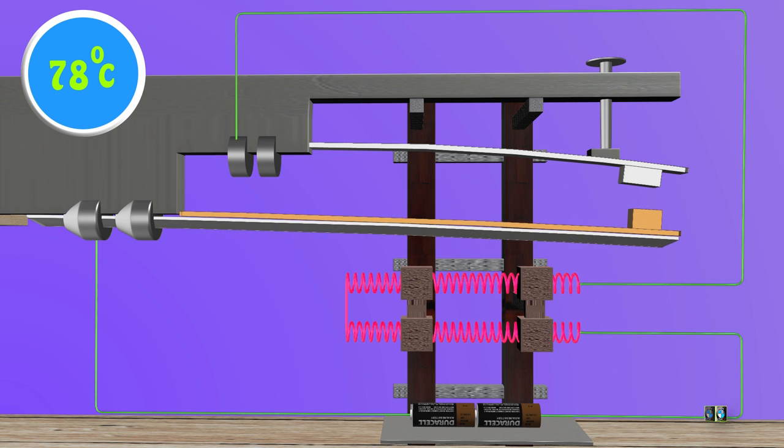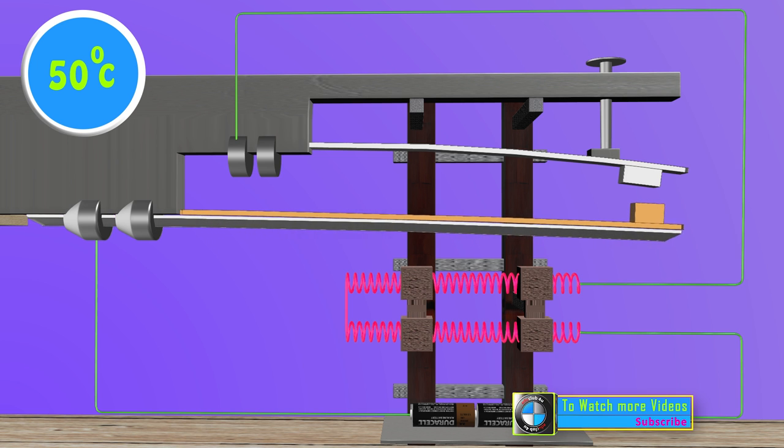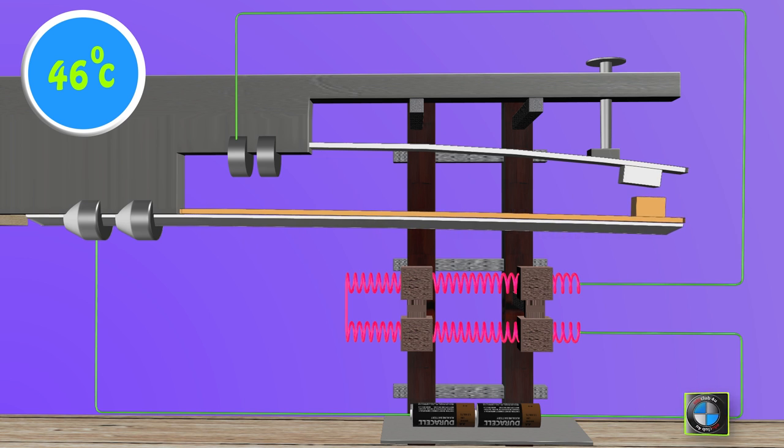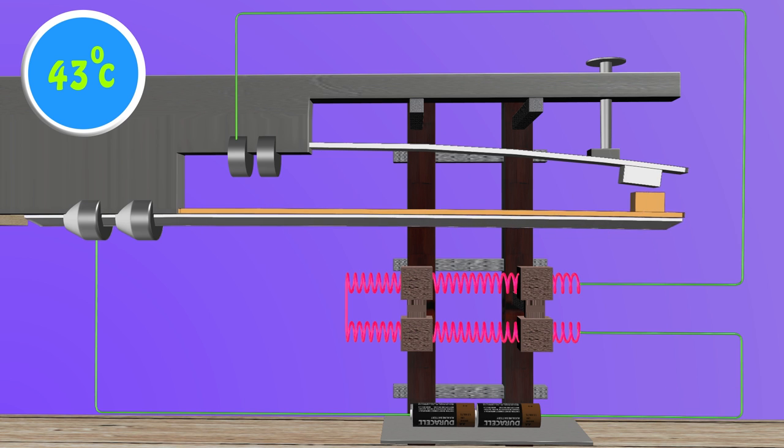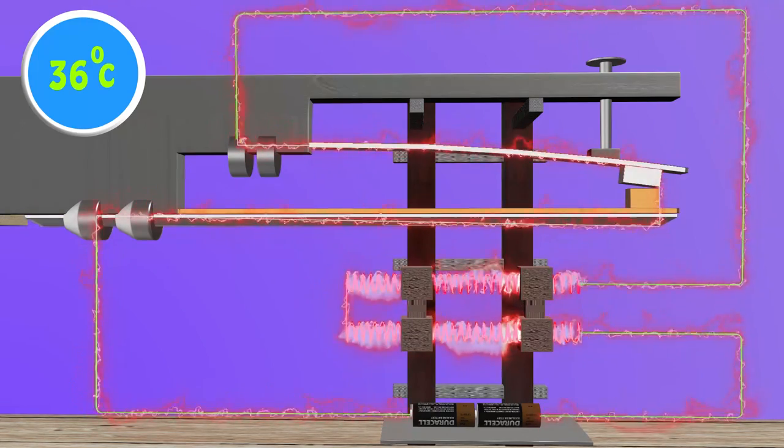Simultaneously, heating element starts cooling and bends back to its original position. As soon as it reaches its position, it touches the steel spring and current starts flowing again thereby making the heating element hot.